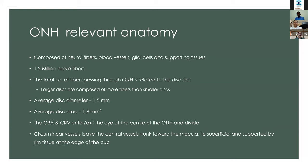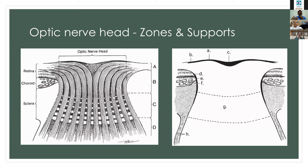The central retinal artery and vein, which enter or exit the eye at the center of the optic nerve, divide within the surface of the optic nerve head. The circumlinear vessels that leave the central vessel's trunk run towards the macula; they lie superficial on the surface of the optic nerve head and are supported by the rim tissue — that is, the edge of the cup — lying closely along the margin of the cup.